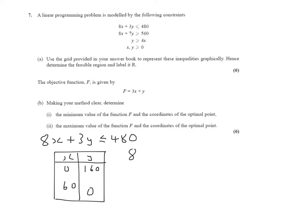Then we've got 8x plus 7y greater than 560. So again, I'm going to draw a little table. I'm going to put in 0s there. When x is 0, 8x is 0, so 7 times something is 560. That's 80. And then when y is 0, 8 times something is 560, that's 70.